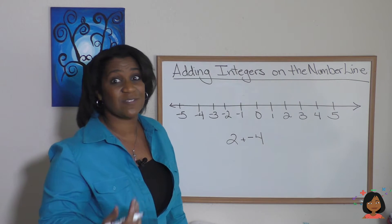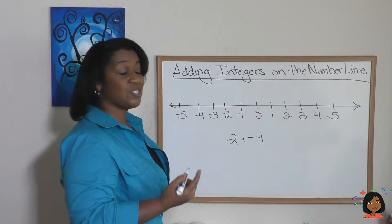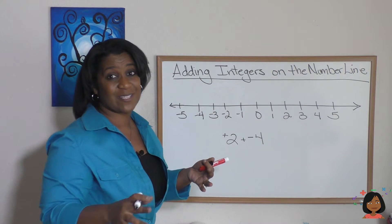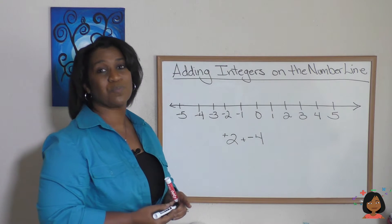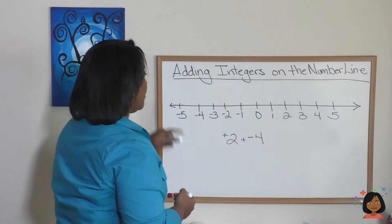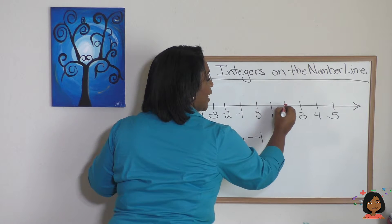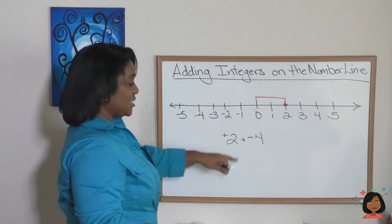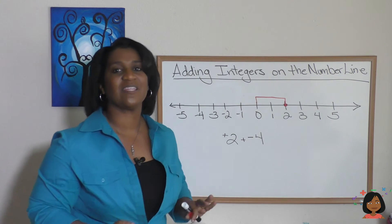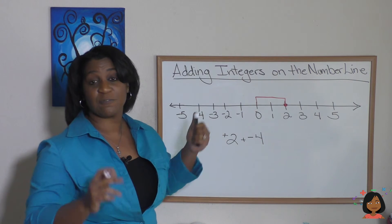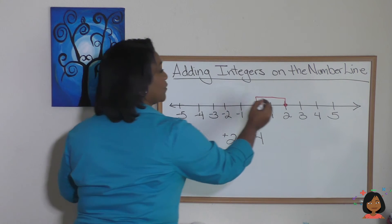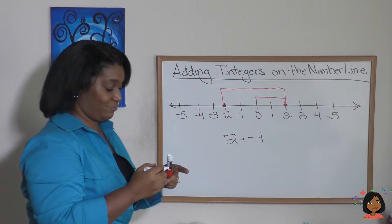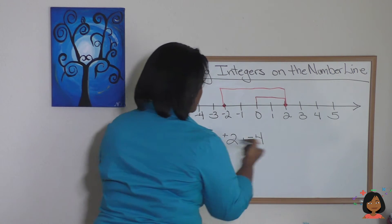Let's see how we can use the number line to add positive and negative numbers. Here we have two plus a negative four. We could write it as positive two plus negative four. First, we go to positive two — we moved two spaces to the right. Second, the negative tells us which direction to go next: we go to the left because the number is negative. Moving four spaces to the left — one, two, three, four — that brings us right to negative two. So two plus negative four equals negative two.